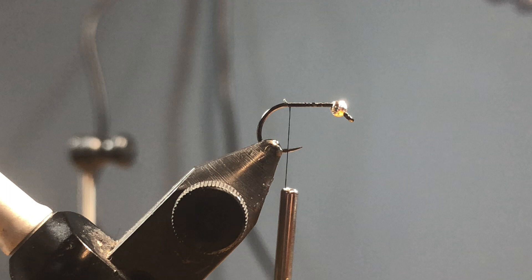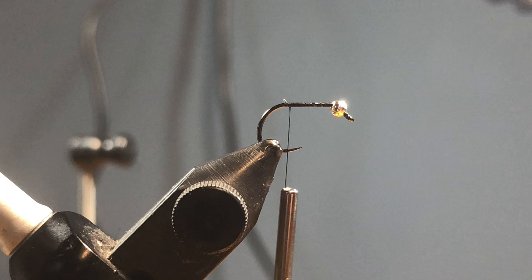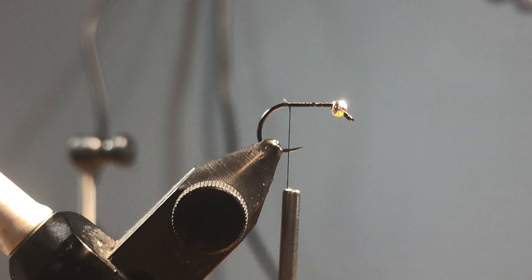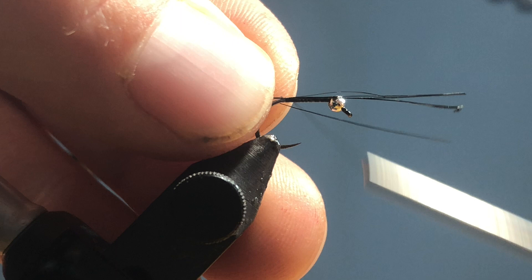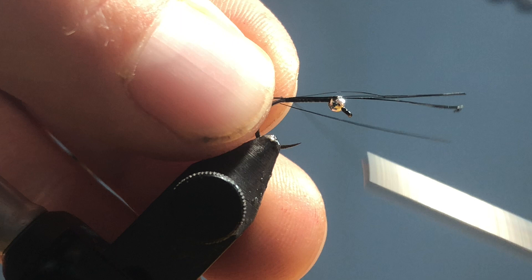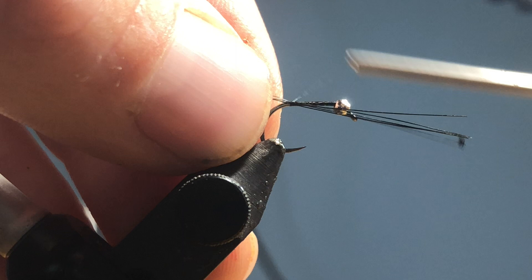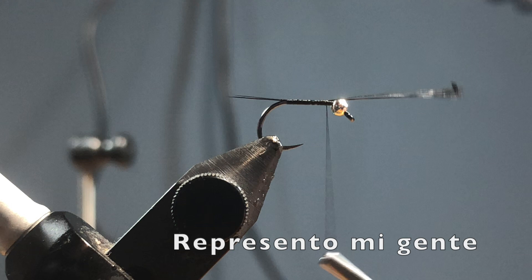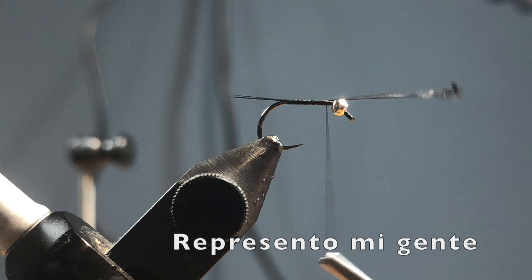So I like to even them up on the stem and then trim. For almost all my nymphs I like the tails to be about three-quarters of a hook shank. Come right in here, perfecto. That's not French but hey. I'm gonna pull these bad boys back, just give it a little trim.